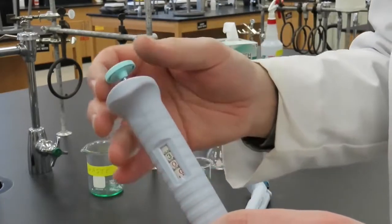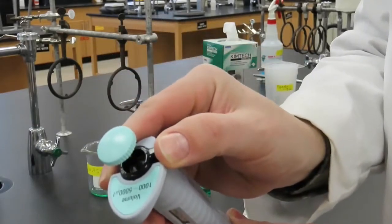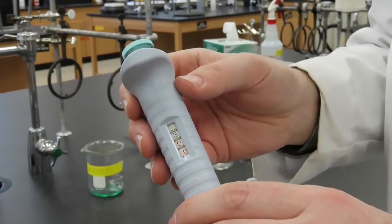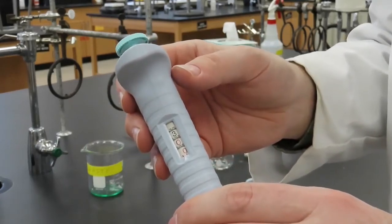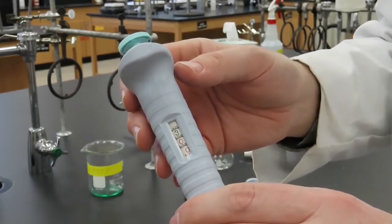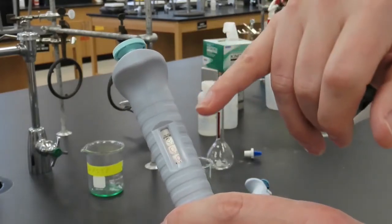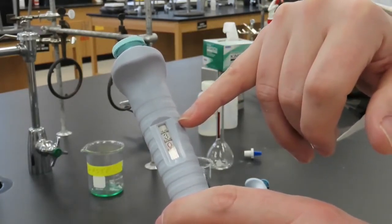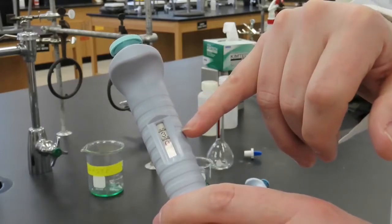To adjust the volume, we first unlock the volume locking ring. The display shows the volume the larger micropipette is currently set at. For this pipette, the black digits represent the whole milliliters and the red digits represent tenths and hundredths of milliliters. Therefore, the volume is currently set at 3.00 milliliters.